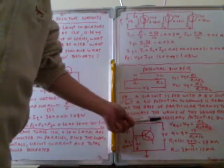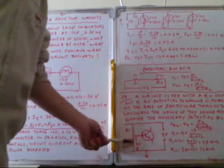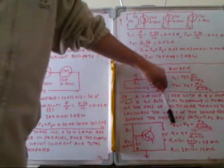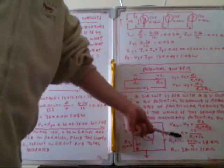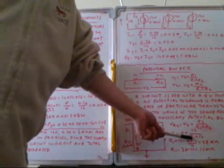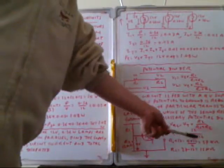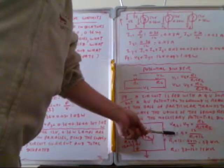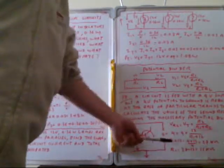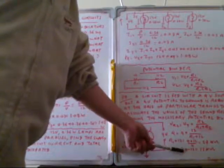Substituting values: 4 = 9 × 12/(R1+12). Cross-multiplying: 4(R1+12) = 9×12, so 4R1 + 48 = 108. Therefore R1 + 12 = 27, giving R1 = 27 - 12 = 15 ohms.